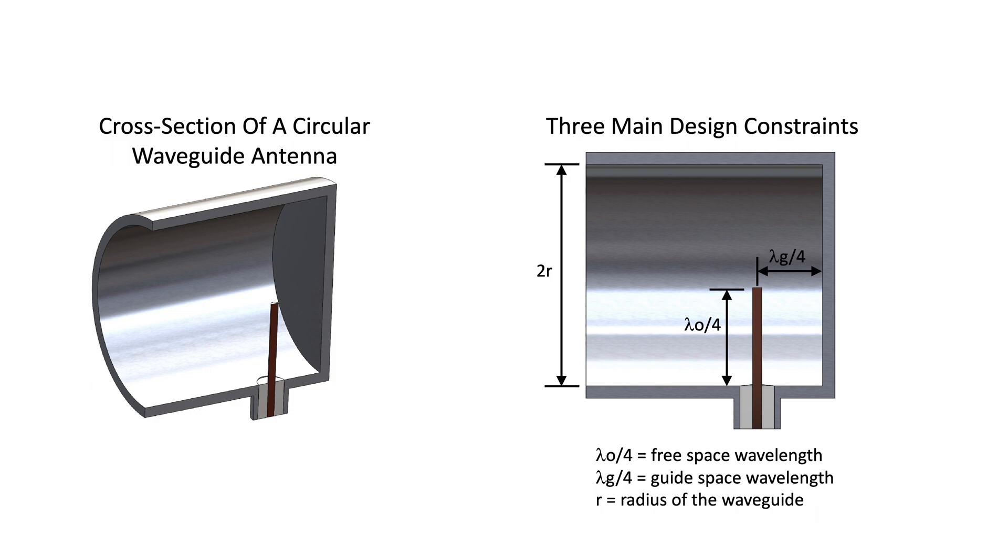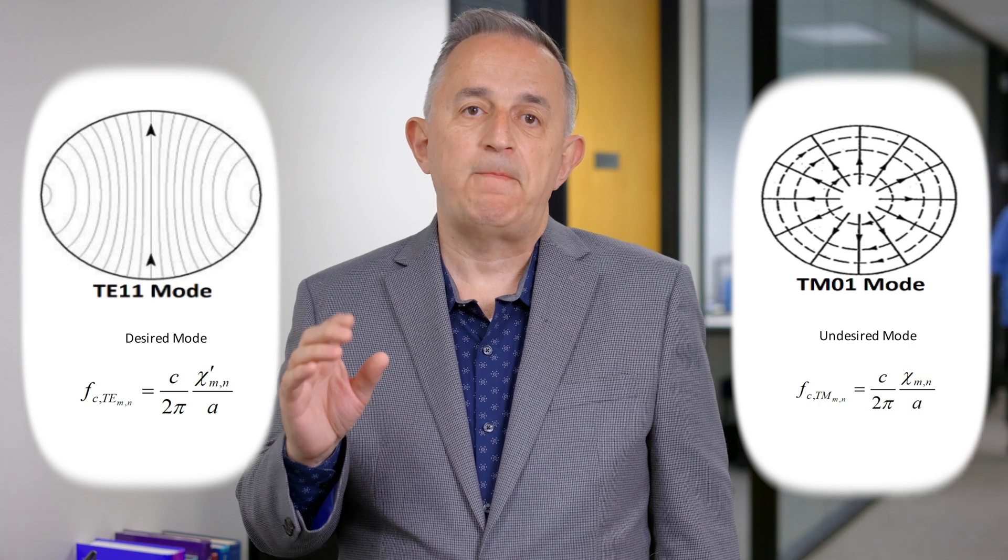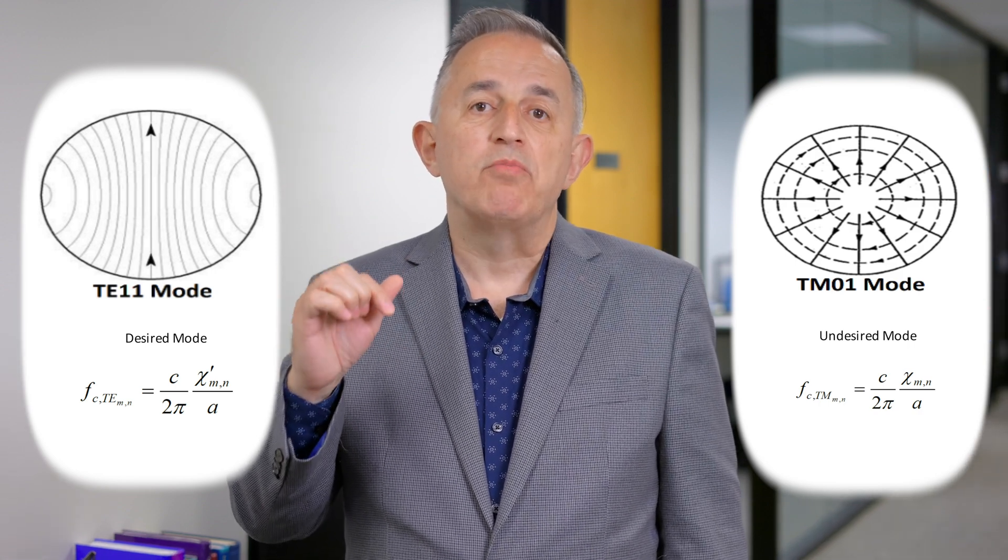The radius of the circular waveguide must be chosen so that it operates above the cutoff frequency of the desired mode and below the cutoff frequency of the first undesired mode. The desired mode is called the TE11 mode, and the first undesired mode is called the TM01 mode. Here are the electric field plots for those modes. The Excel file linked below performs the required calculations for choosing the radius.